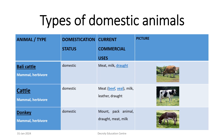Barley cattle: mammal, herbivore; domestic. Commercially used for meat, milk, and draught. Cattle: mammal, herbivore; domestic. Commercially used for meat (beef, veal), milk, leather, and draught.